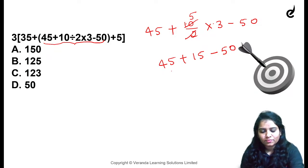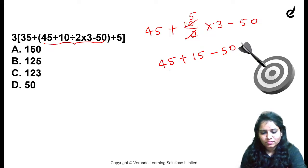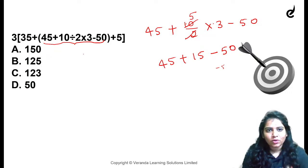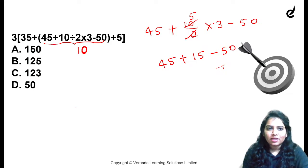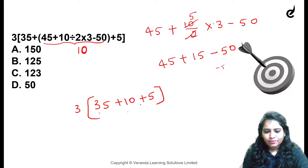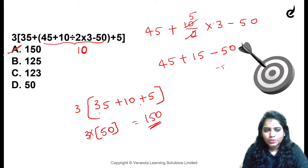OK, equation — you will solve: 3 and minus, so minus 10, complete portion 10 and 3 — 35 plus 10 plus 5, clear: 40, 50. So 350 into 150 is the correct answer. Option A.